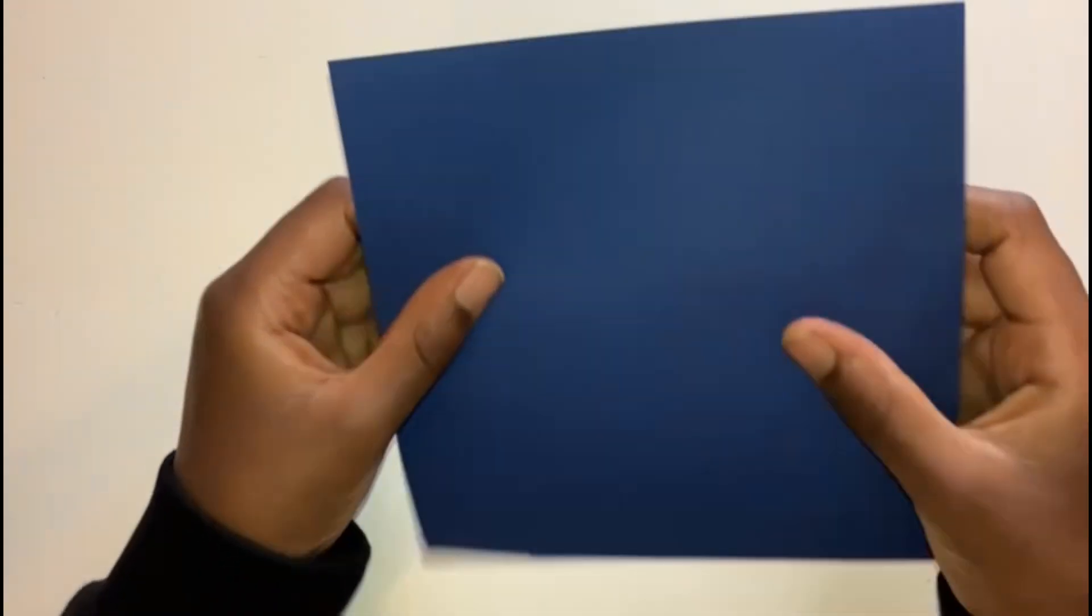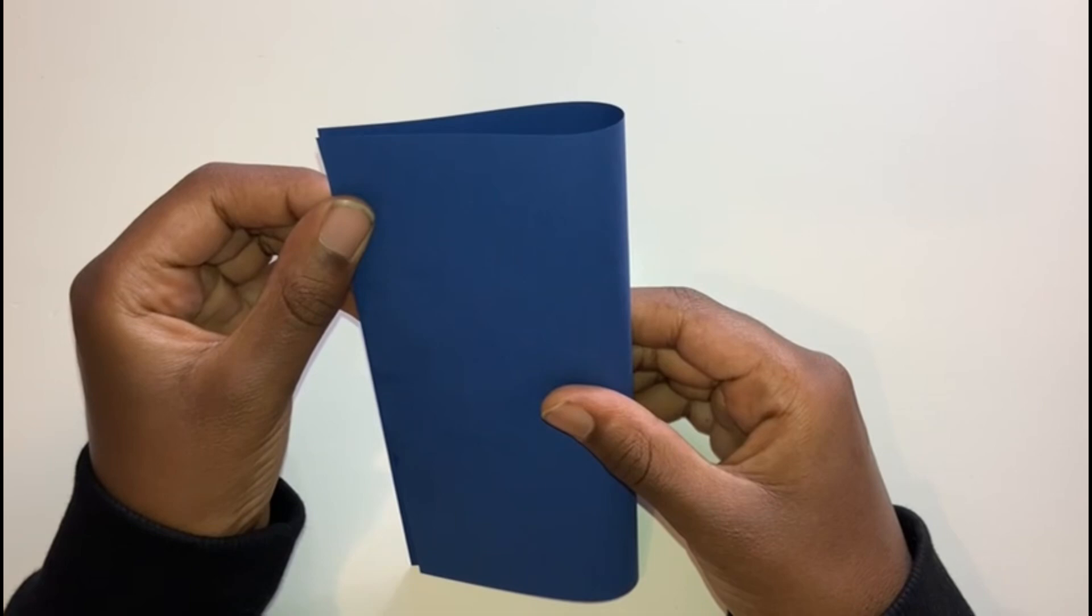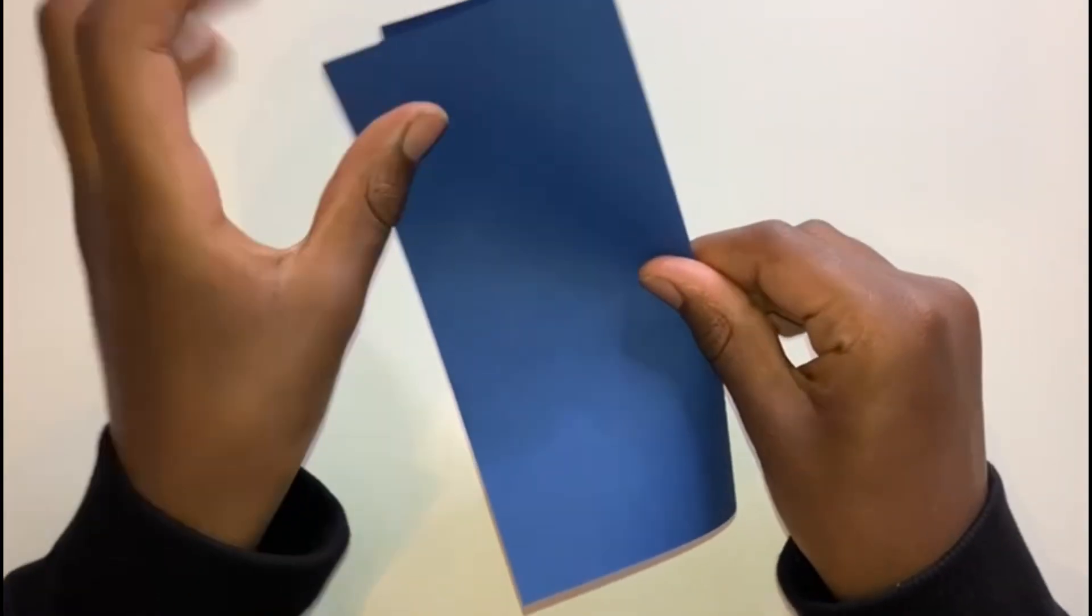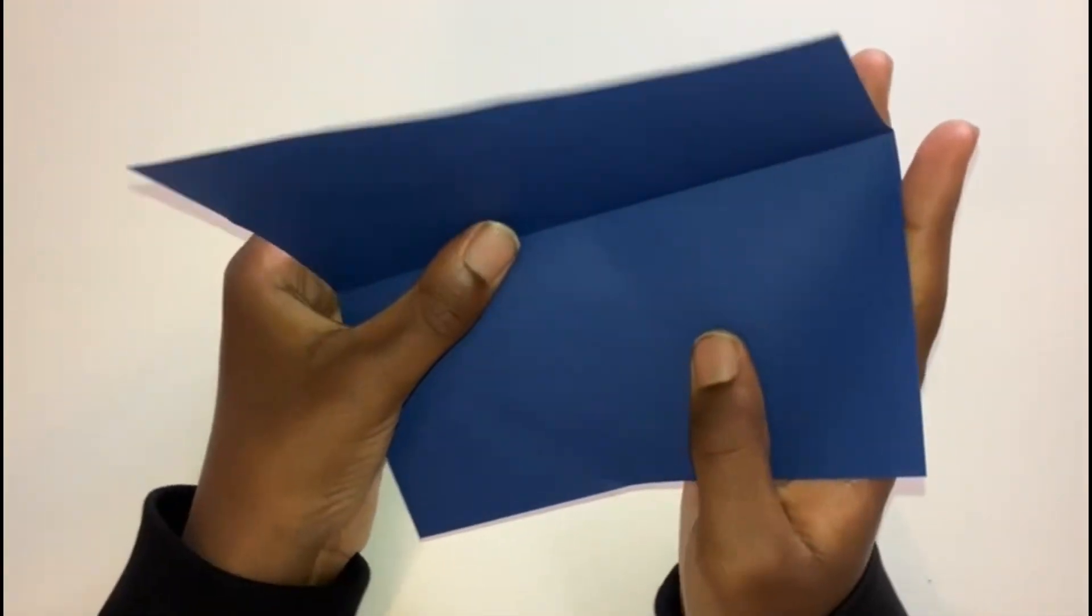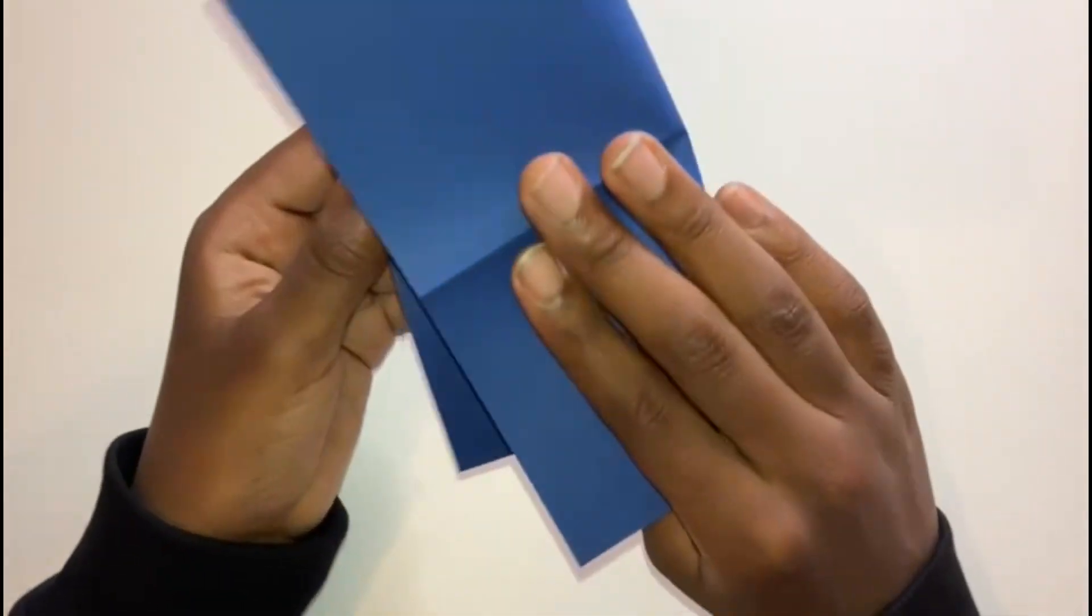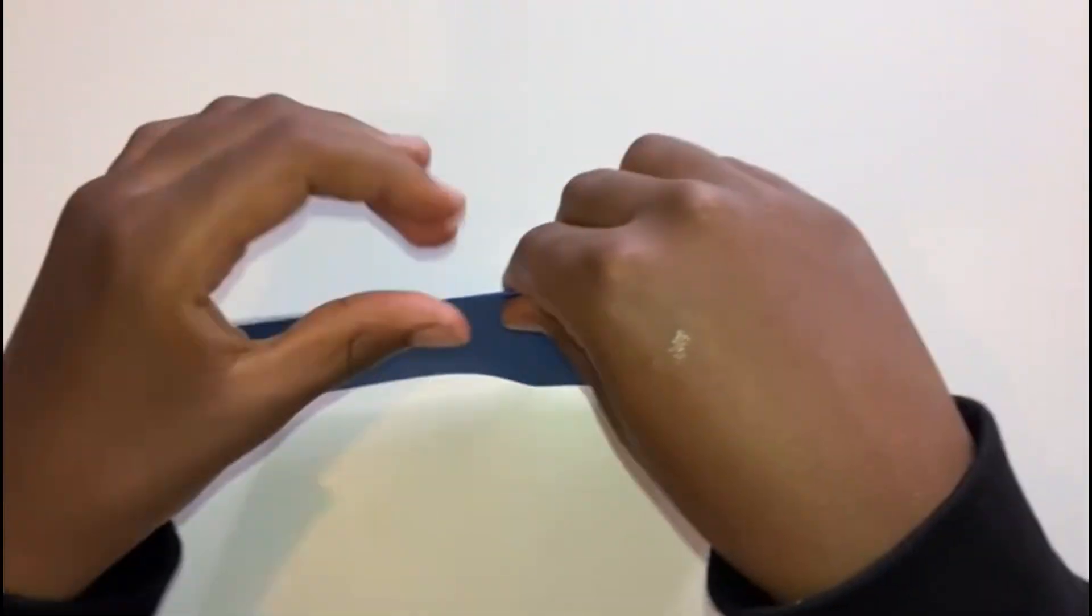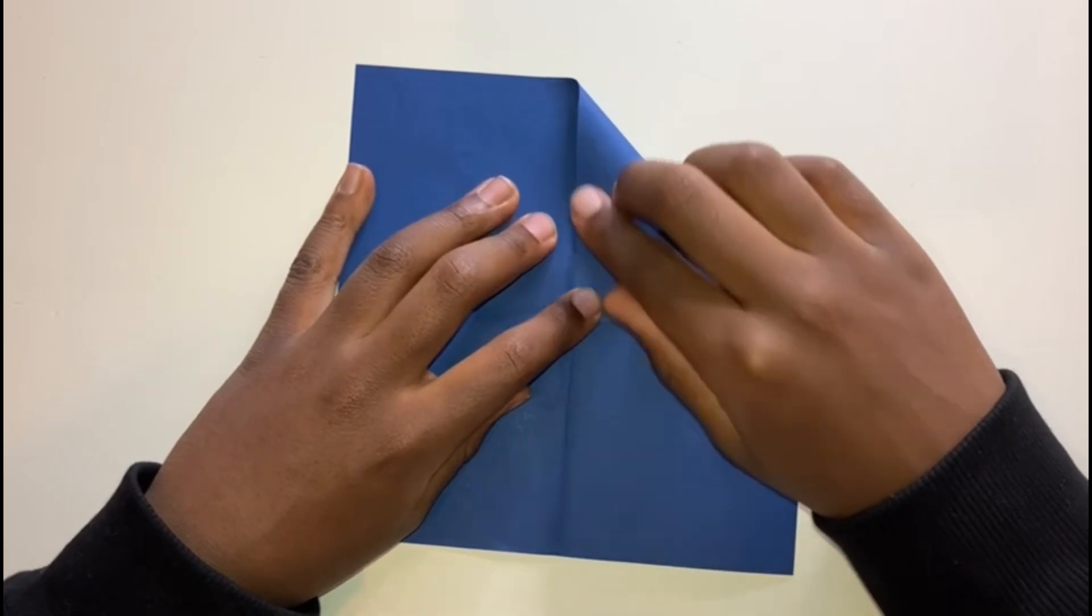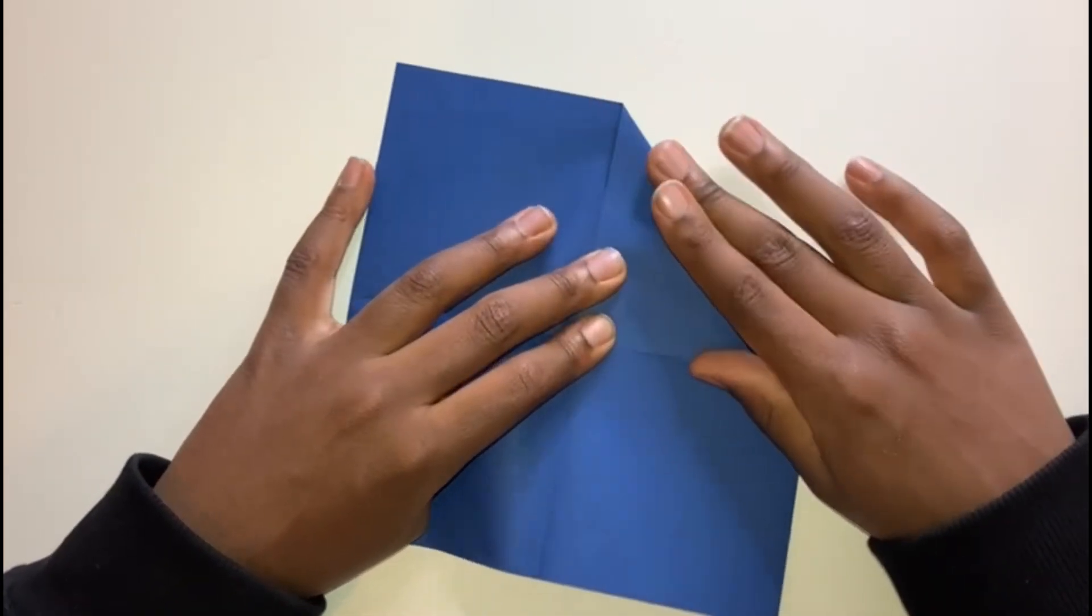Okay, so first we fold the piece of paper in half like so. Then we fold it again in half like so. Open it up and fold the edges into the middle of the piece of paper.